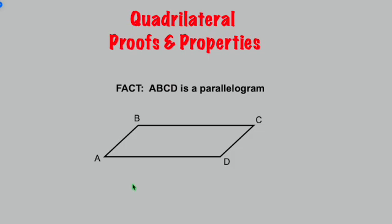Before we go ahead and take a look at quadrilateral proofs, let's take a look at properties of this figure here A, B, C, D. If we told you it's a parallelogram — and it is — what we know immediately from the definition is that the opposite sides of the parallelogram must be parallel to each other. That's what a parallelogram is.